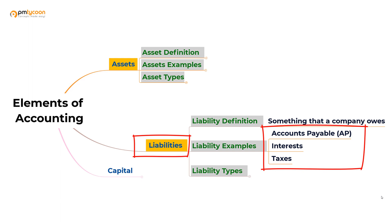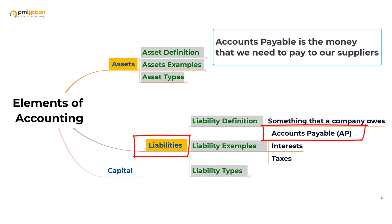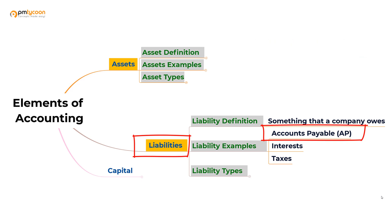What is accounts payable? Accounts payable is the amount we owe to other parties for the things that we bought from them or for the services we received from them. Other parties can include suppliers or anybody. Accounts payable is a liability because we have an obligation to pay them back, and since you're paying them back, it takes money out of the business.